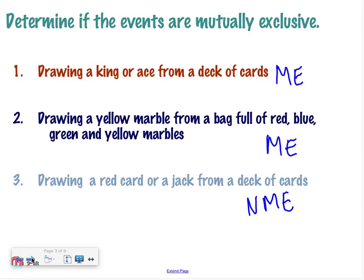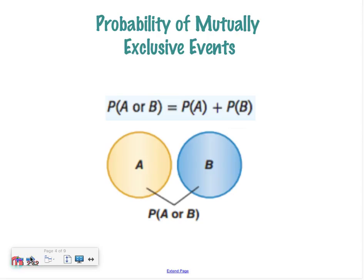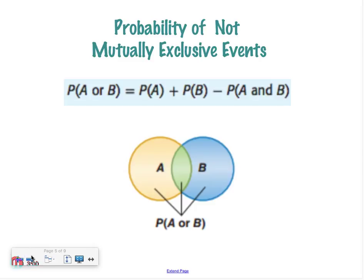Do you see the difference between examples one and three? A king and an ace are two separate cards — there's no card with both. But you could draw a red jack from a deck of cards, so those events can happen at the same time. For mutually exclusive events, we add the two probabilities. For events that are not mutually exclusive, we first add the probabilities, but there's overlap, so we have to subtract the ones they share to avoid double counting.